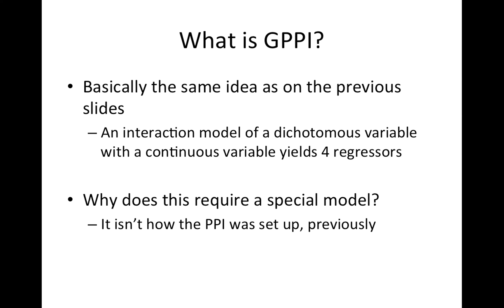So what is GPPI? It stands for Generalized PPI. It's basically this same idea but using PPI interactions instead of simpler interactions. The idea is: if you're running a PPI model and you have two tasks, you're going to end up with four regressors. You might be thinking, why is this worthy of a big deal? Why wouldn't we just do this?